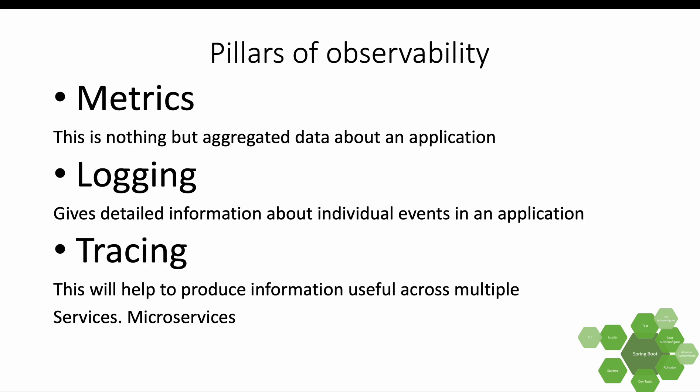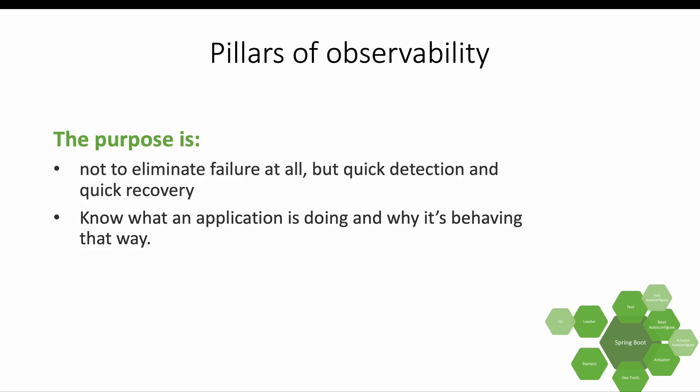Then we have tracing, which produces information across multiple services in a microservices architecture where multiple services call each other. You need to keep track — for example, when service A calls service B to produce a particular request — and you want to match that request back to the originating call. Normally you use a trace ID to do that.